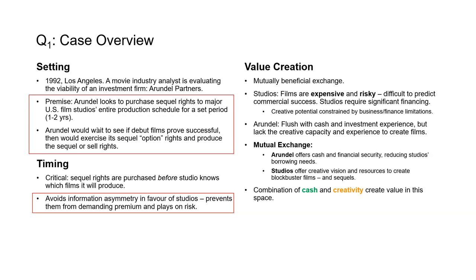There's a critical element of timing here as well: the sequel rights had to be purchased before the studio even knew which films it would produce. This is to avoid information asymmetry. If the studio is producing the film, it will begin to get more and more intimately familiar with it and can ascertain whether it will be successful in theaters. This would allow them to charge a premium to R&L for purchasing the sequel rights later in the process — that's why acquisition of sequel rights happens at the preliminary stage.